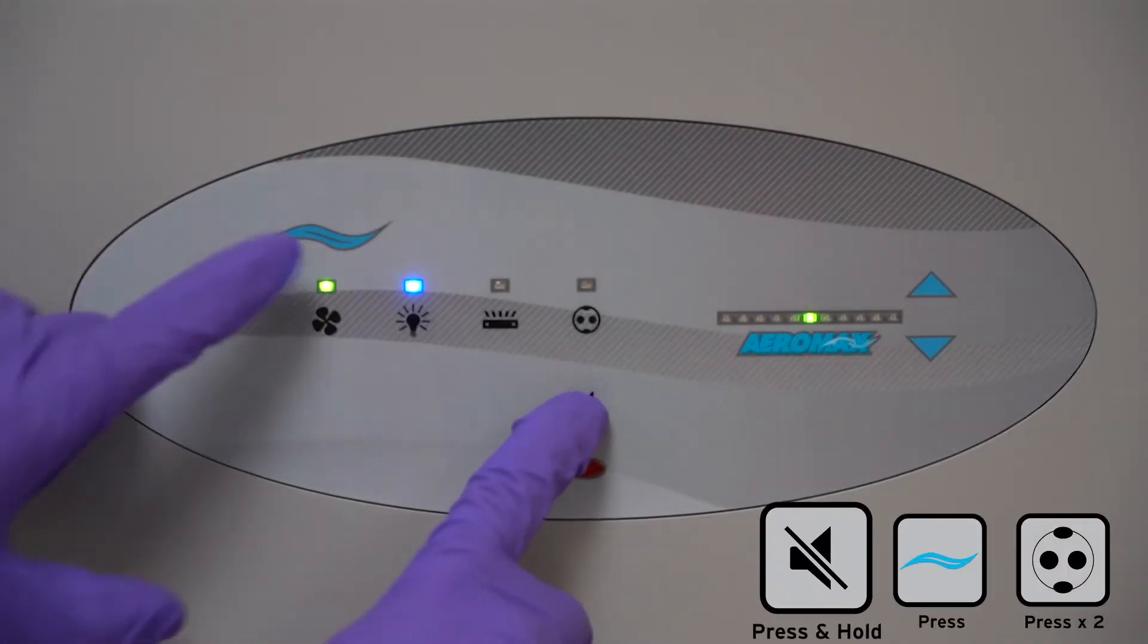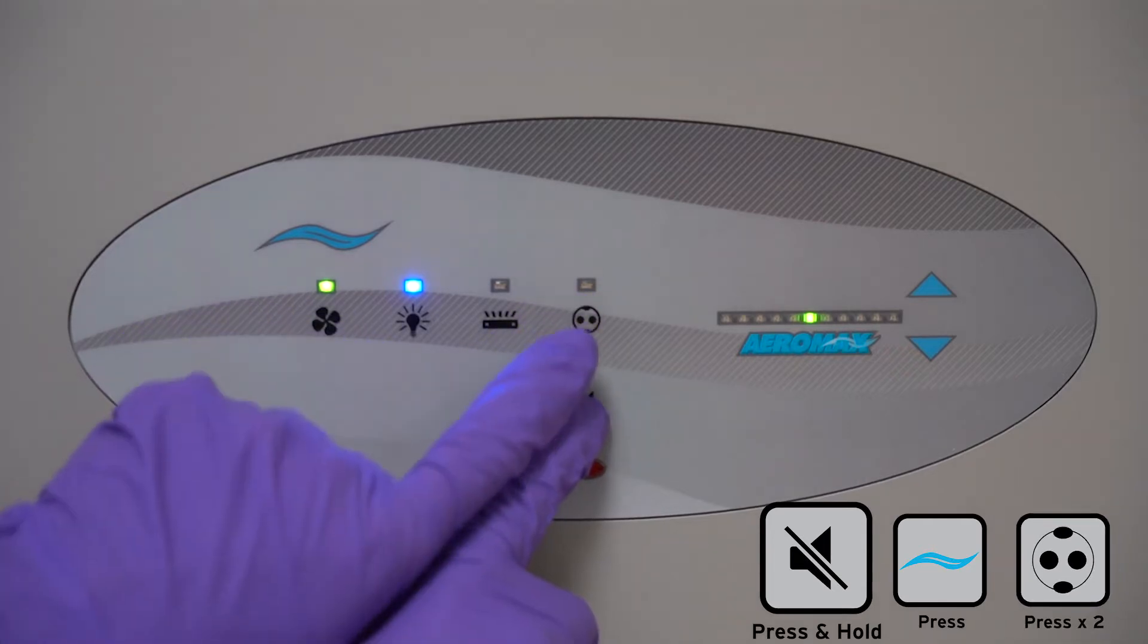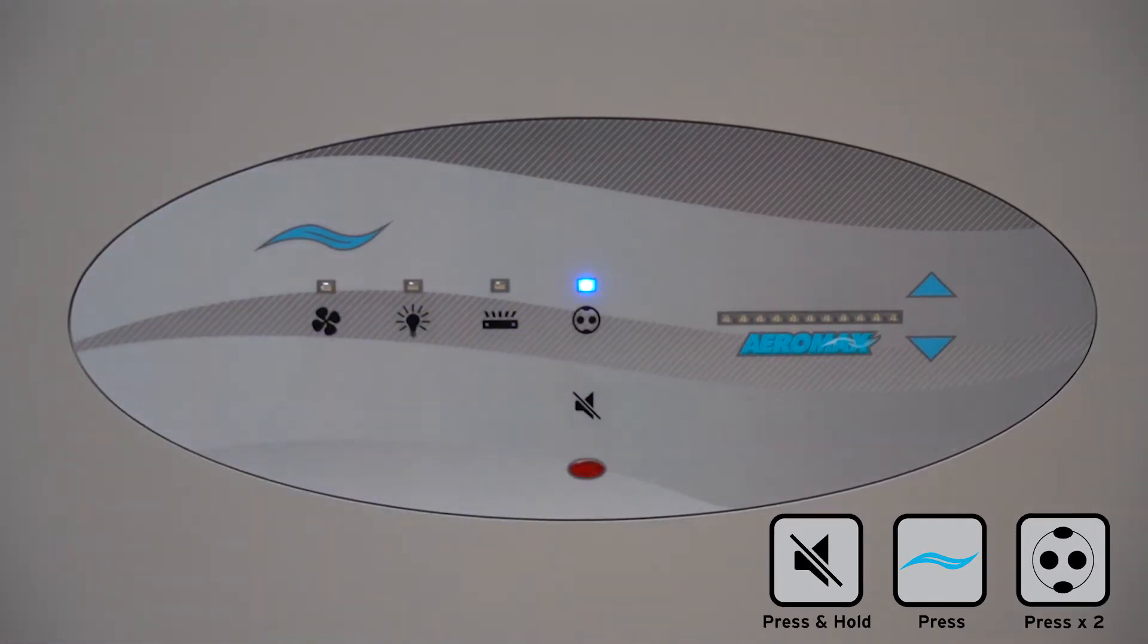Enter the outlet timer menu using the key sequence shown. A blinking light means you're in.